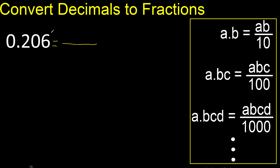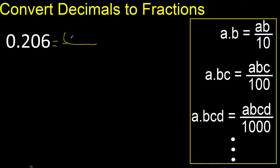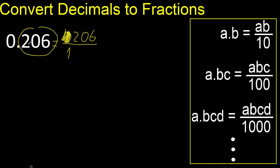First, all the numbers without the decimal point — here. Eliminate zero, always eliminate zero — here. Always number 1. After the point there are 3 numbers, therefore 3 zeros.